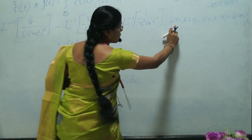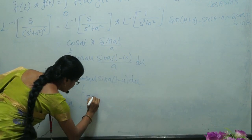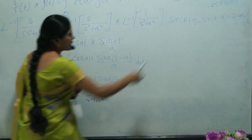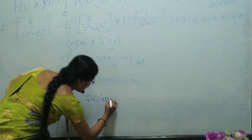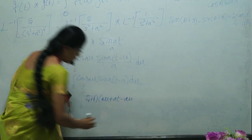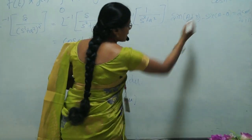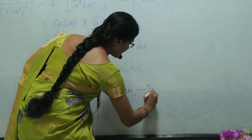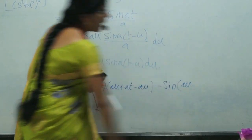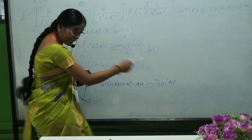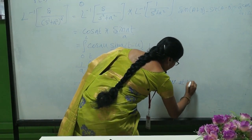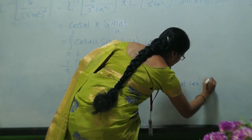Using sin(A+B) and sin(A−B) with A = au and B = a(t−u): sin(au + at − au) = sin(at), and sin(au − at + au) = sin(2au − at). So the integral becomes 1/(2a) times the integral from 0 to t of [sin(at) − sin(2au − at)] du.